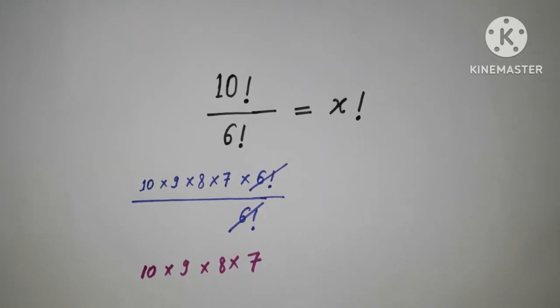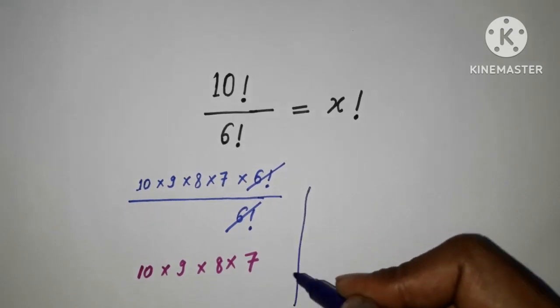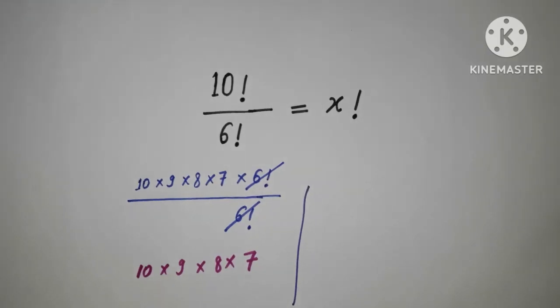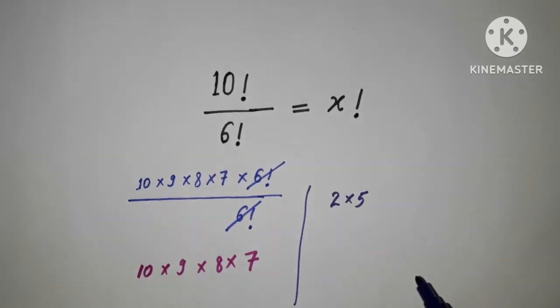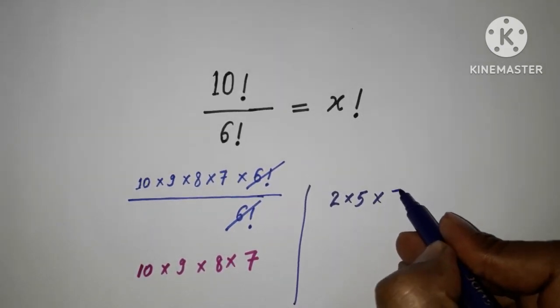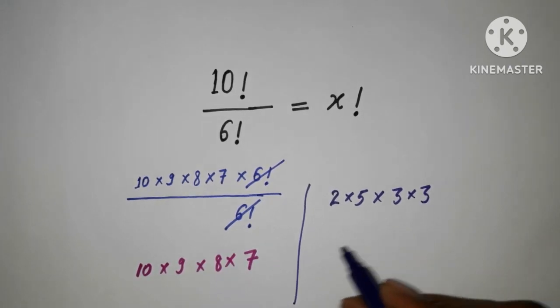Next step is that you need to make it concentrate here. What I am going to do: 10 can be written as 2 multiply 5, and 9 can be written as 3 multiply 3.